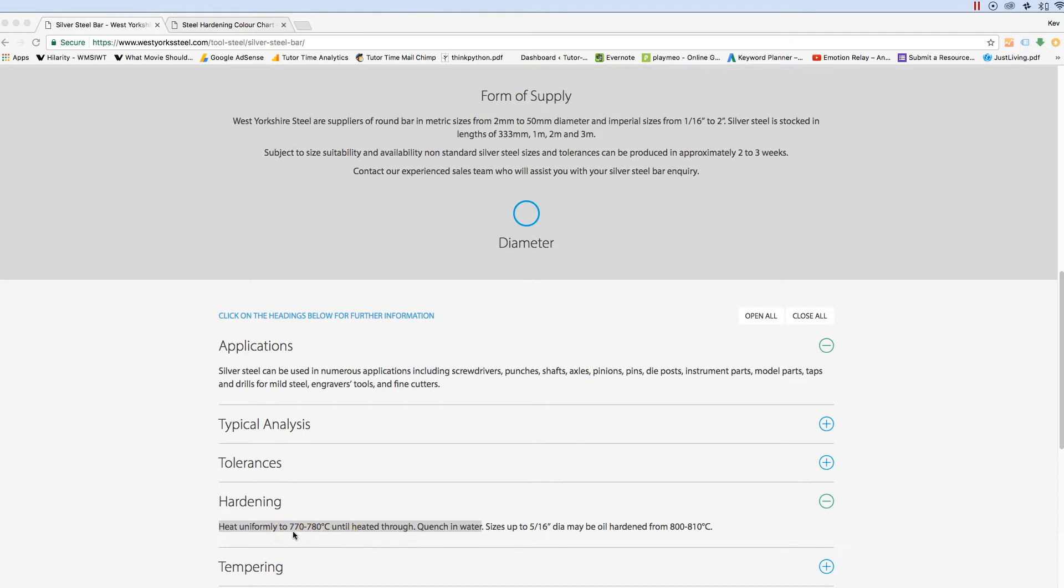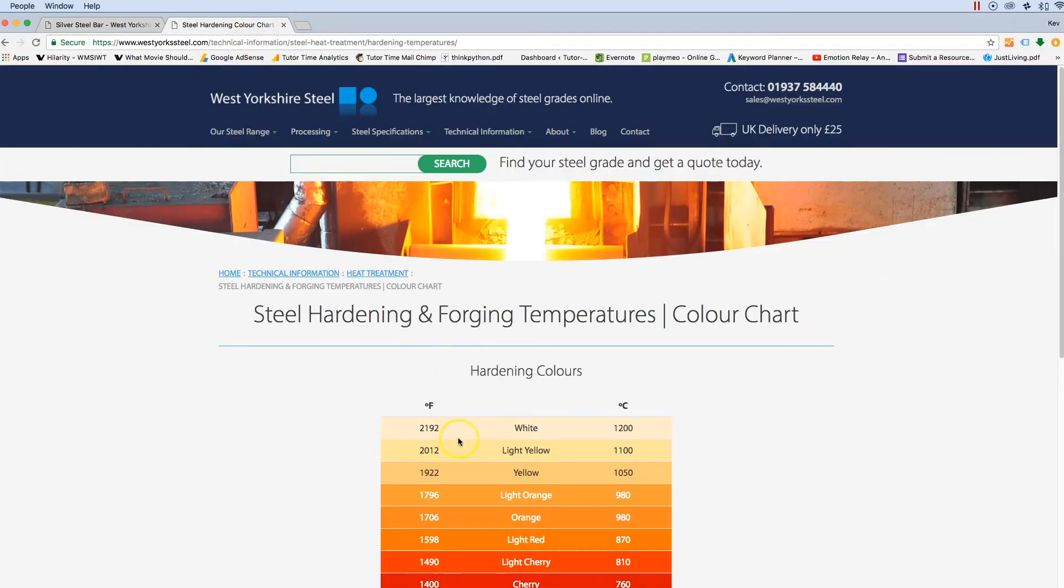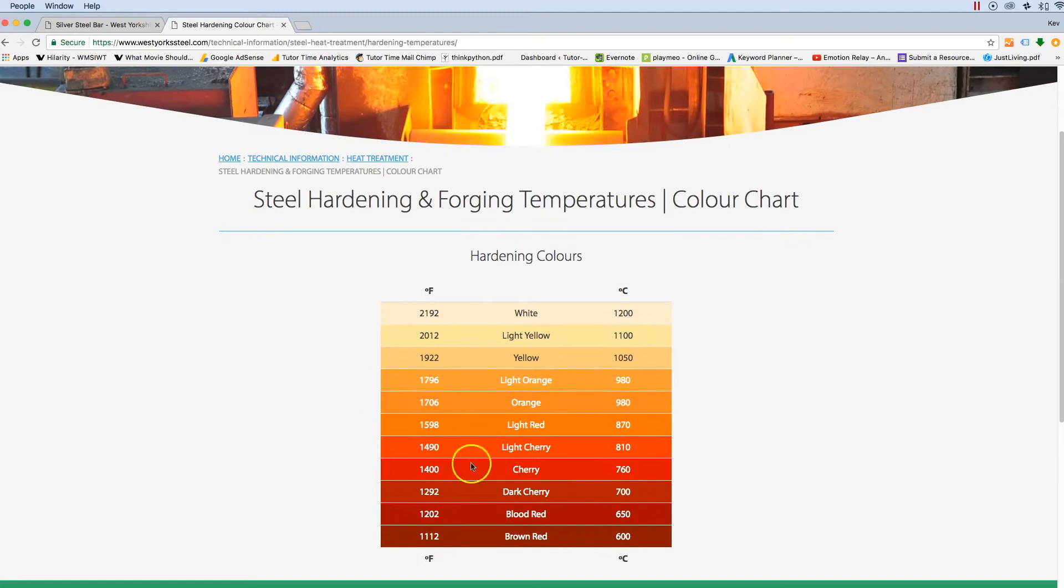According to this data sheet, to harden it we need to get to 770 degrees. Without an infrared heat measuring system, we need another method of measuring that temperature. The traditional way is to use a color chart—if we get it to about cherry red, we're going to get to 760-770 degrees, which is the ideal temperature for quenching in water and getting that hard finish we need for a punch.